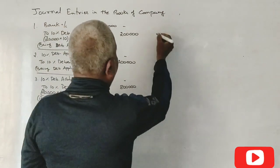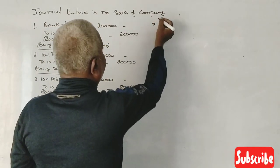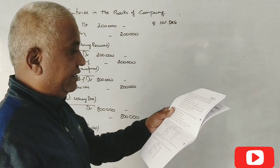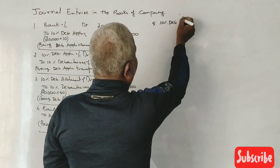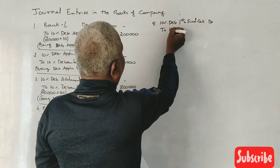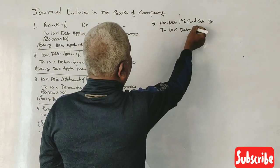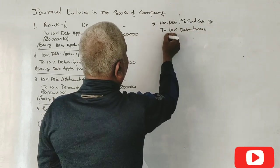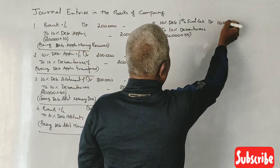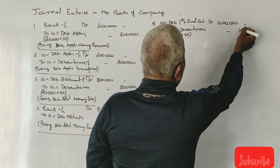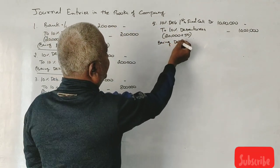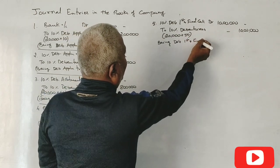Next, fourth journal entry. 10 percent debenture first and final call account debit to 10 percent debentures account. First and final call 50 rupees, 10 lakh rupees. Being debenture first and final call money due.